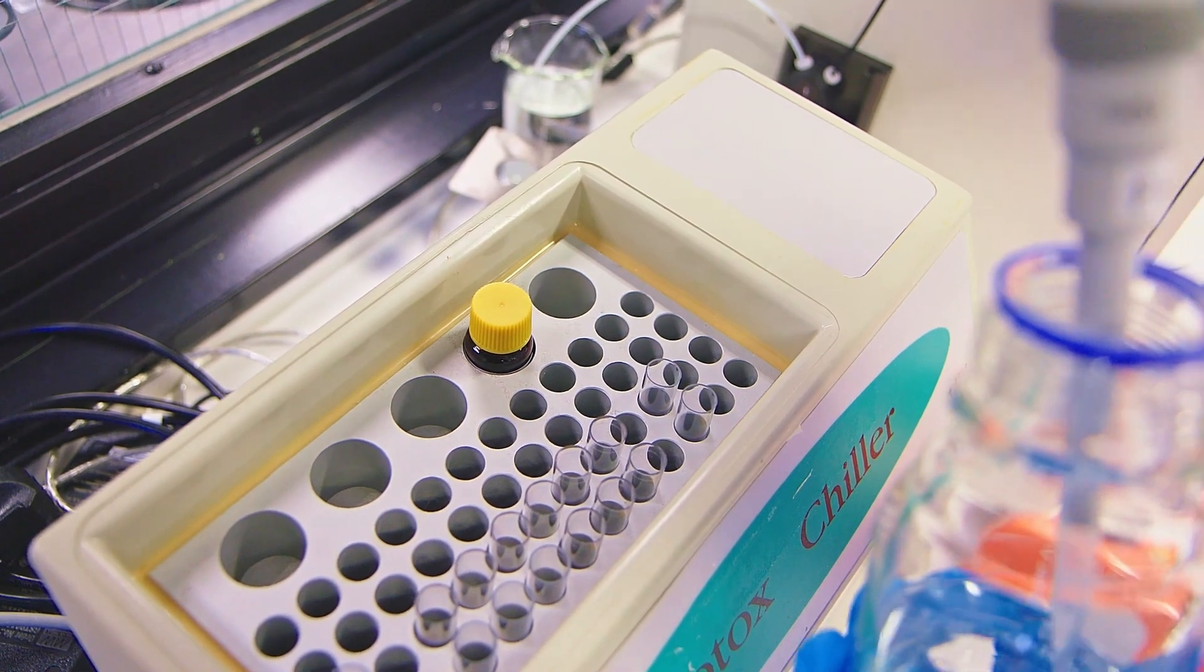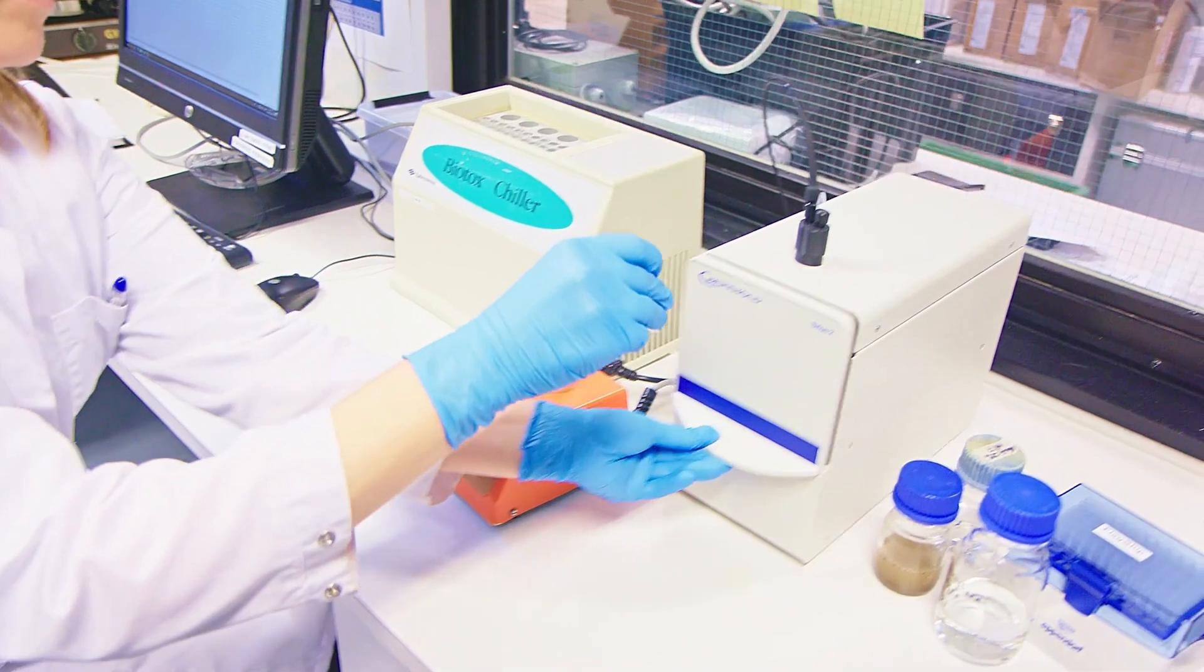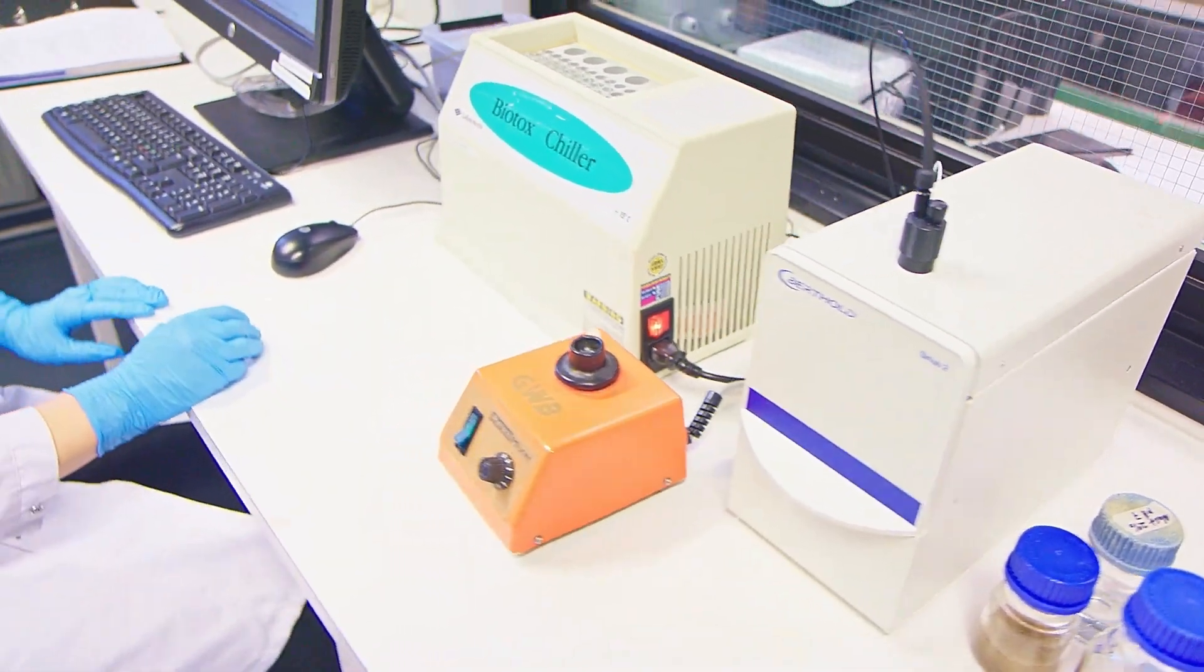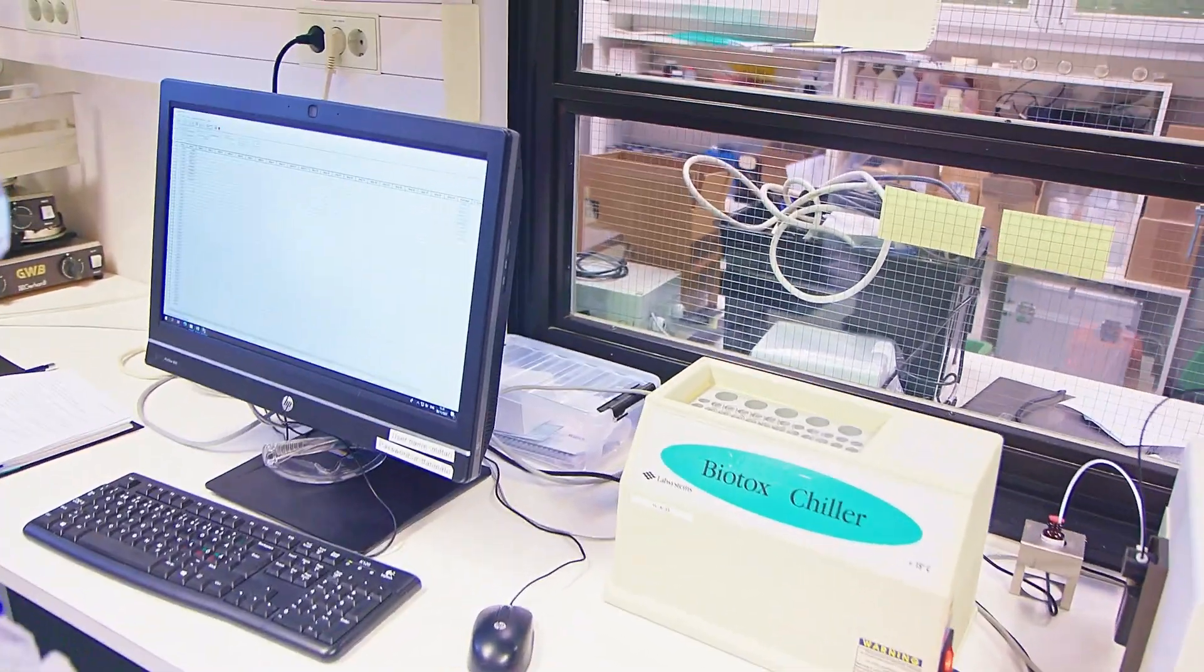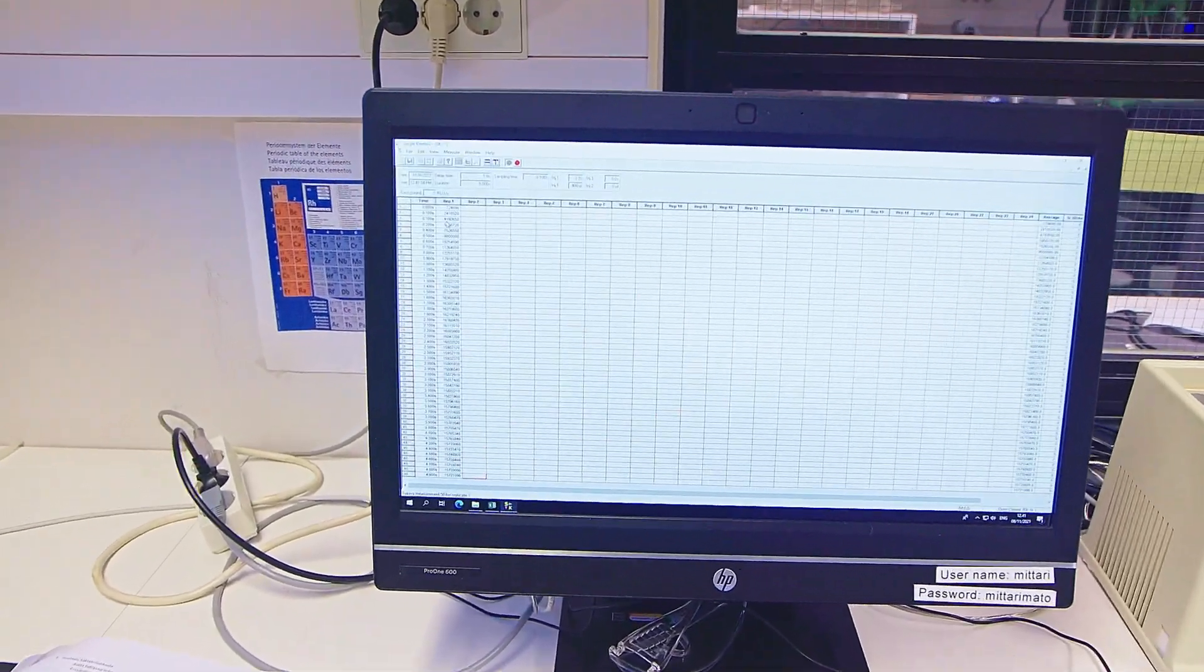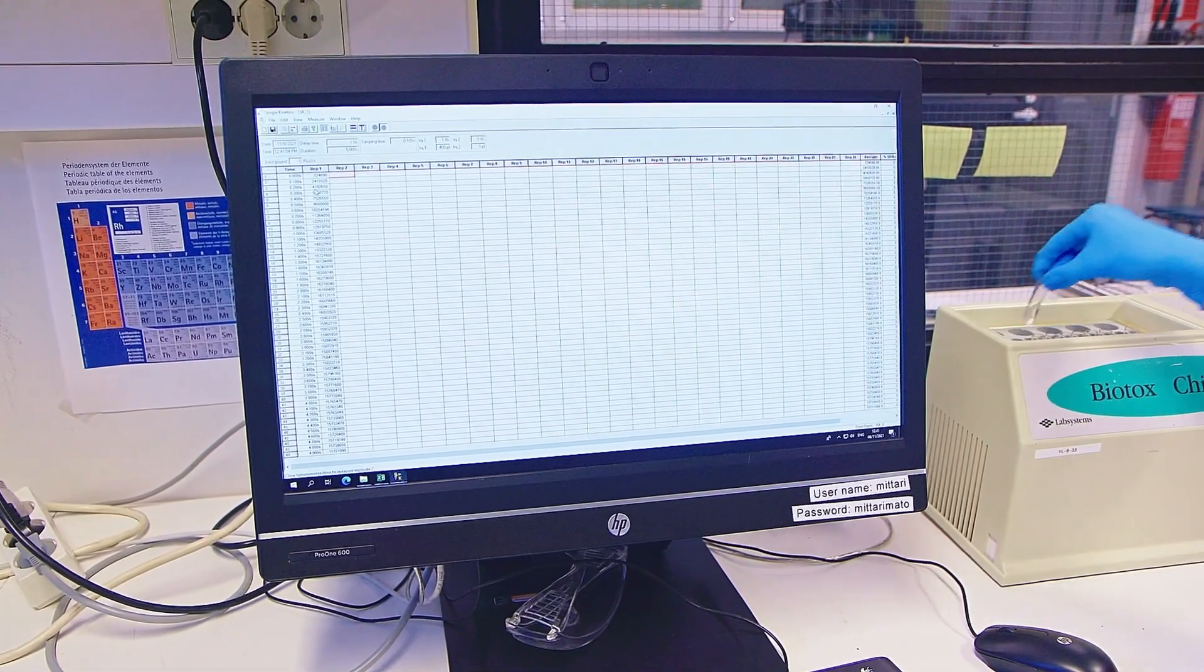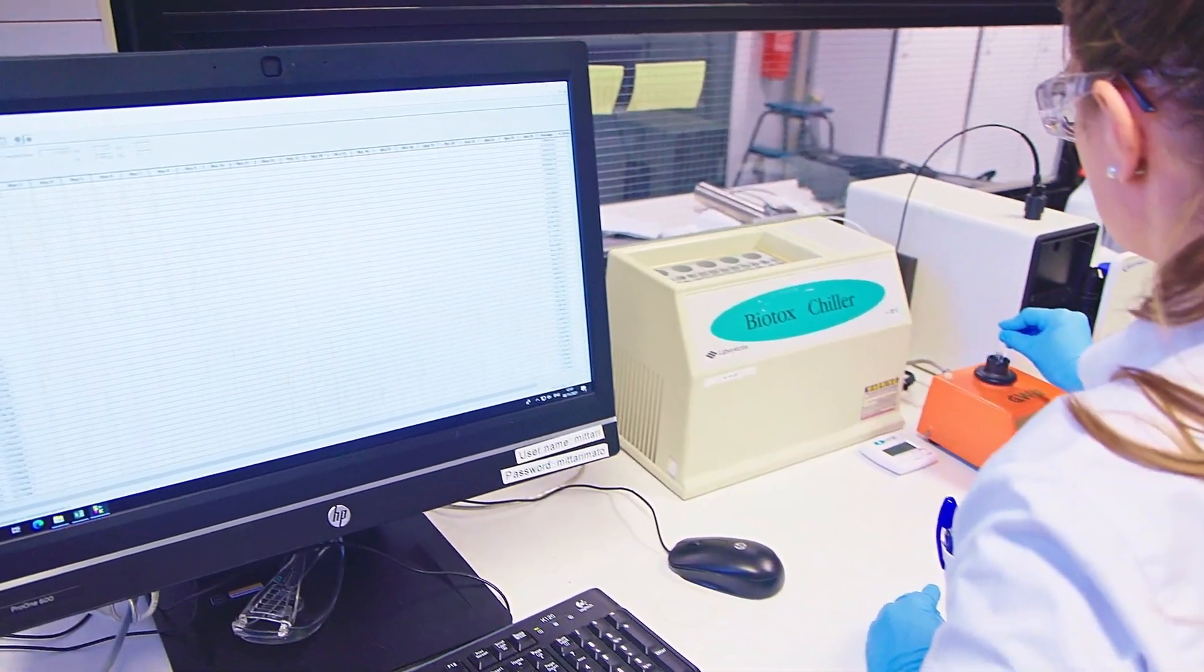The light output of the bacteria is measured with a luminometer. A sample cuvette is placed in the luminometer, which dispenses the bacterial suspension into the cuvette. The luminometer starts to measure the amount of light as soon as the bacteria have been added, and the light output can be monitored in the measuring software. The amount of light is re-measured after the contact time. The contact time is typically 30 minutes.